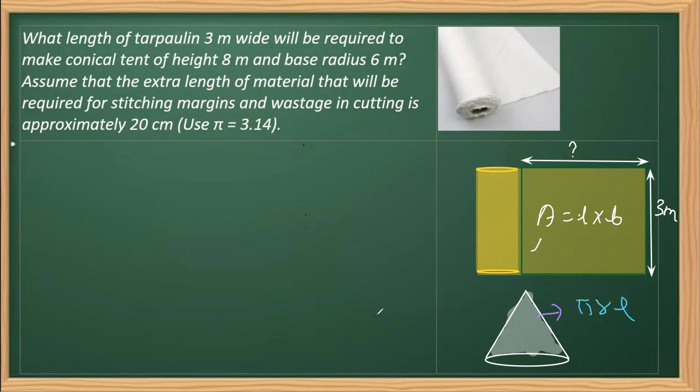Let's write down all the information that we have symbolically. What we know here is the height, H is 8 meters. We also know the radius of the base, which is 6 meters.